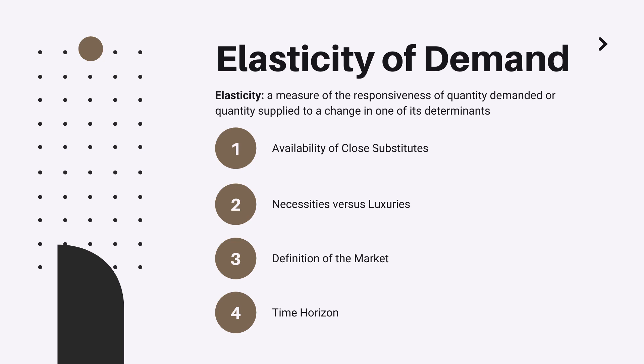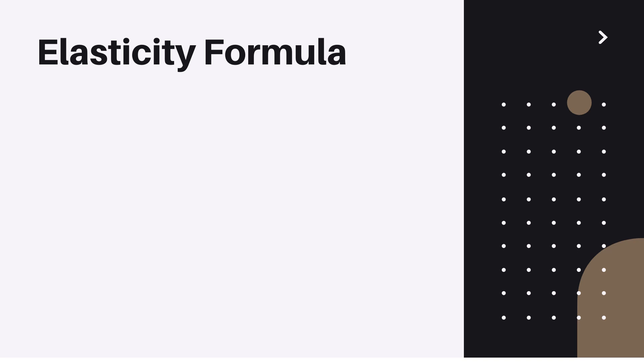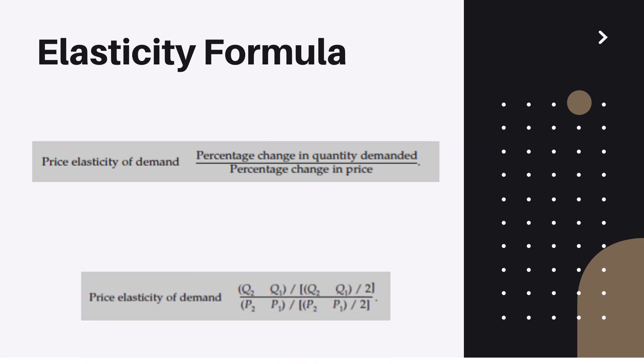Now the price elasticity of demand is calculated by the following formula: percentage change in quantity demanded divided by the percentage change in price. And here is a more mathematical representation of the same formula based on the midpoint calculation method.